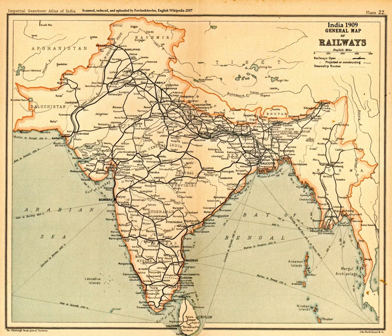Under the Zabt system, the Mughals conducted extensive cadastral surveying to assess the cultivated area. The Mughal state encouraged greater land cultivation by offering tax-free periods to those who brought new land under cultivation, according to evidence cited by economic historians Immanuel Wallerstein, Irfan Habib, Percival Spear, and Ashok Desai. Per capita agricultural output and standards of consumption in 17th century Mughal India were higher than in 17th century Europe and early 20th century British India.